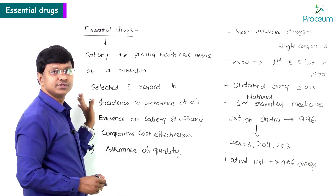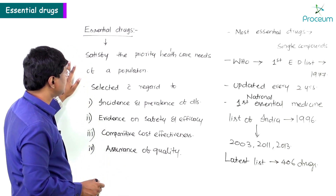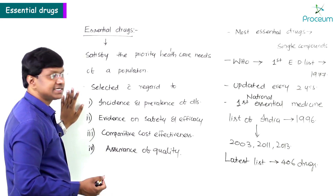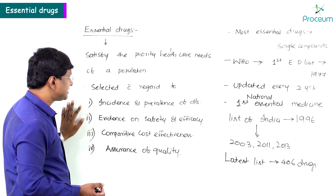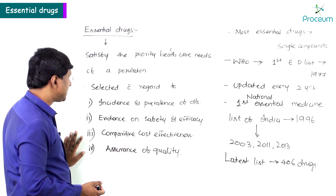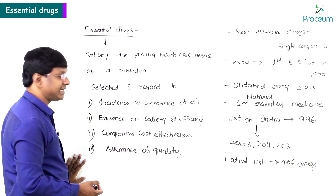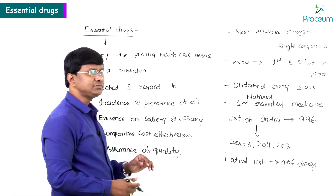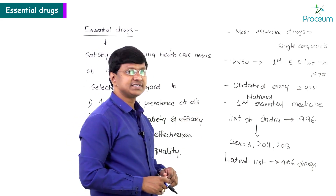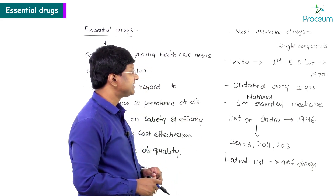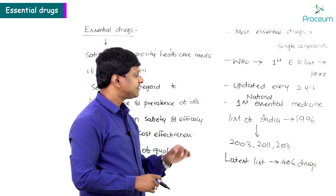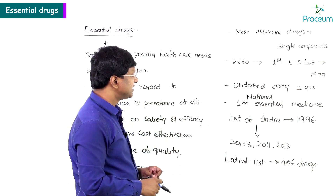To summarize: essential drugs are those that satisfy the priority health care needs of the population. They are selected based on incidence and prevalence of disease, evidence on safety and efficacy, comparative cost effectiveness, and assurance of quality. Most essential drugs are single compounds, and WHO gave the first essential drug list in 1977, updated every two years.